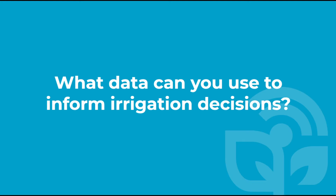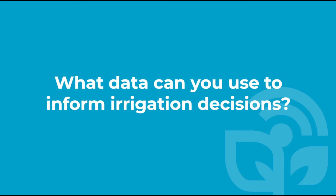What data can you use to inform irrigation decisions? To answer this question, we need to first consider what are the conventional approaches to irrigation scheduling that are currently available to us. These conventional approaches can be categorized into balance-based, soil-based, and plant-based techniques.